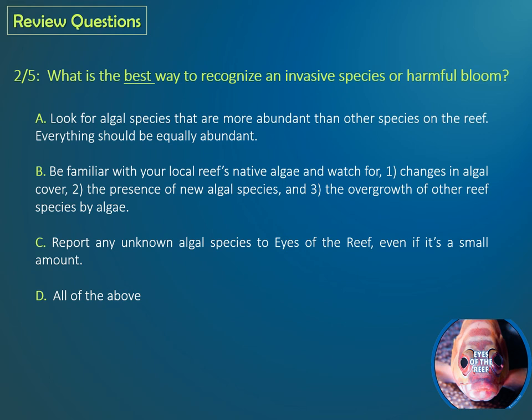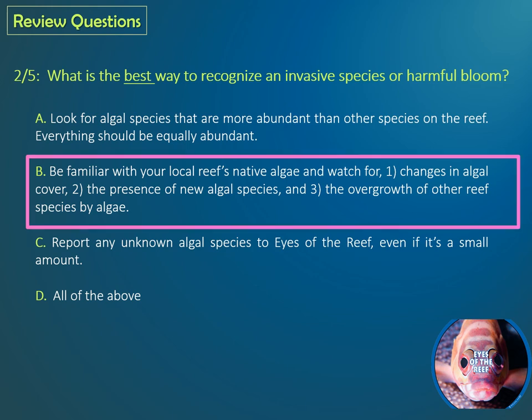Question two: What is the best way to recognize an invasive species or harmful bloom? A: Look for algal species that are more abundant than other species on the reef — everything should be equally abundant. B: Be familiar with your local reef's native algae and watch for changes in algal cover, the presence of new algal species, and the overgrowth of other species by algae. C: Report any unknown algal species to Eyes of the Reef, even if it's a small amount. D: All of the above. The correct answer is B.